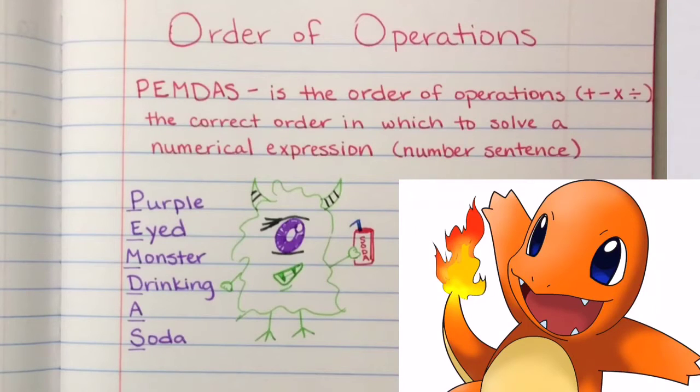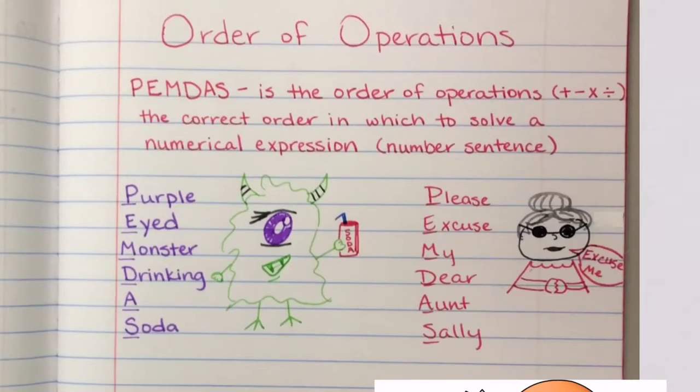So one way that we talked about today with my class is to remember PEMDAS is a purple-eyed monster drinking a soda. So I drew a purple-eyed monster drinking a soda. Now if your parents are watching this with you, when we were young, now we're old, we learned a different way. We learned, please excuse my dear Aunt Sally. So whichever way works for you, whichever one you remember, that's the one you can do.